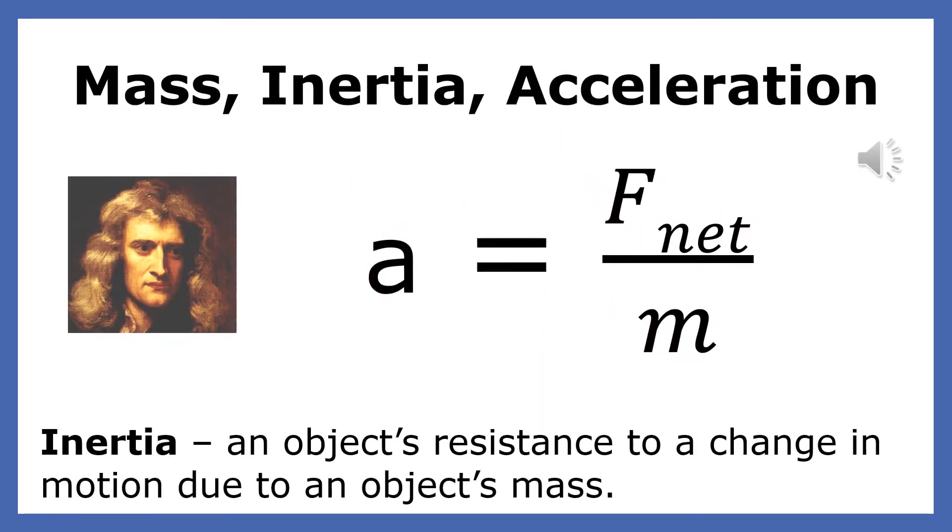Newton's Second Law also tells us that the more mass a body has, the more difficult it is to accelerate. An object's resistance to a change in motion due to its mass is called inertia. Inertia and mass are directly related. A body with ten times the mass of another body will have ten times more inertia and be ten times more difficult to accelerate.